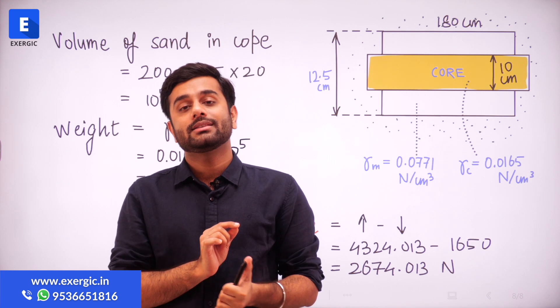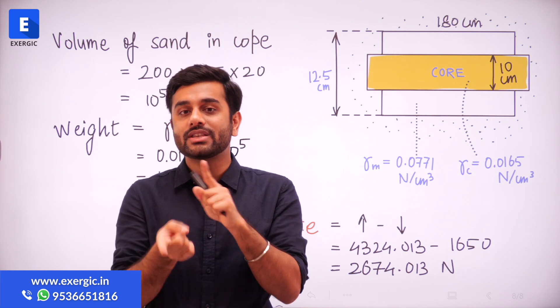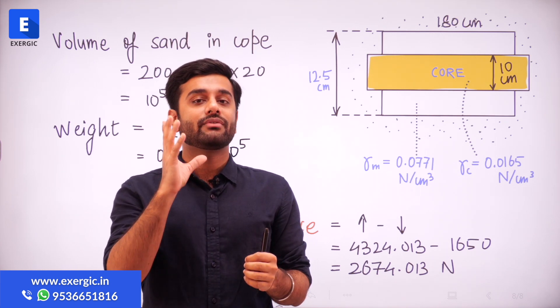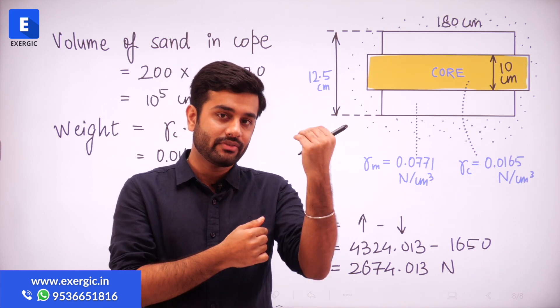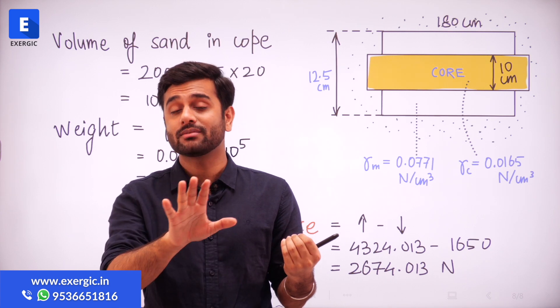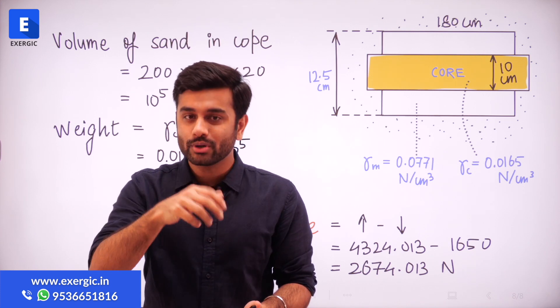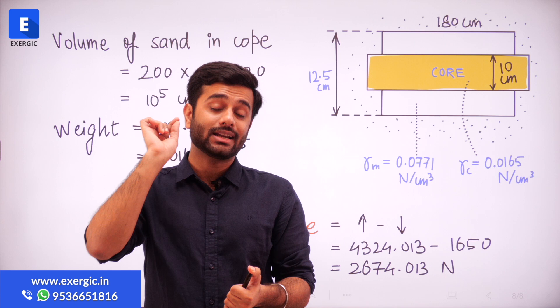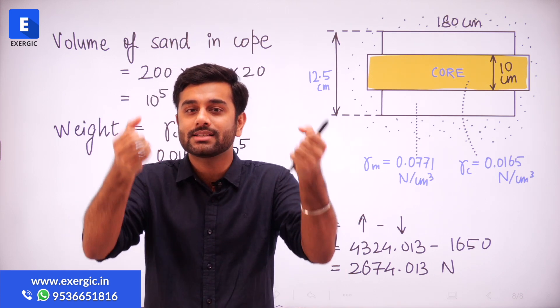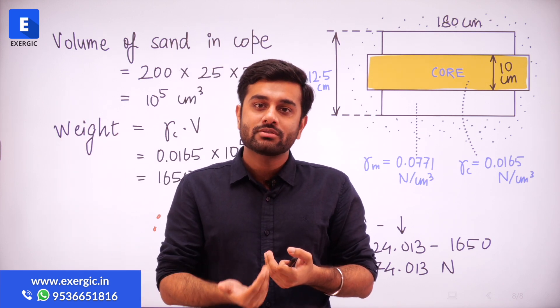The point here is that how much should be that weight? In that calculation, be careful to see which value is higher. Generally, the upward force that we find is higher than the weight of the cope. That is the general situation. So obviously, you need some extra weight to put over the cope to balance it. But the point is that there will be certain cases where the cope's weight is strong enough to balance the upward metallostatic forces.